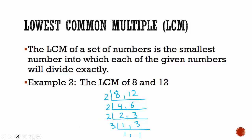So now we multiply. We have 2 multiplied by 2 multiplied by 2 multiplied by 3. 2 multiplied by 2 is 4. 4 by 2 is 8. 8 by 3 is 24. The LCM of 8 and 12 is equal to 24.